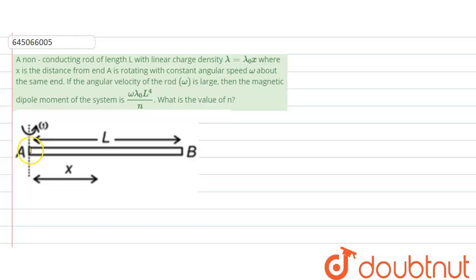We are taking x from end A and it is rotating about this end. Now, if the angular velocity omega is very large, then the magnetic dipole moment of the system is given as omega lambda naught L to the power 4 divided by n. We need to calculate what is the value of n.